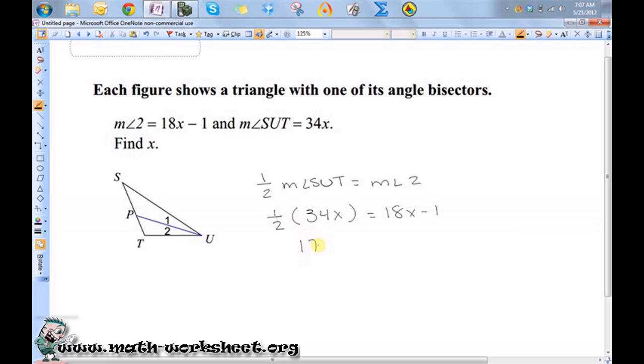So that just means 17X is equal to 18X minus 1. So if I subtract 18X from both sides, I'll get negative X is equal to negative 1, which means X must equal 1.